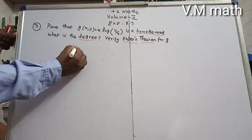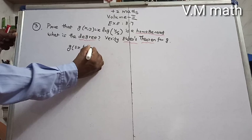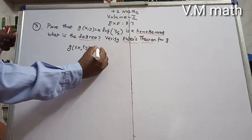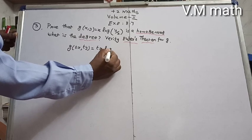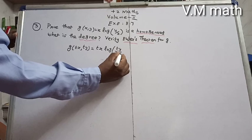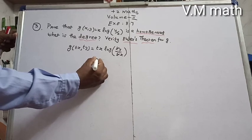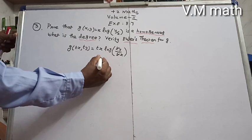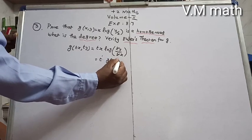We compute g(tx, ty): substituting x→tx and y→ty gives tx·log(ty/tx). The t cancels inside the log, so we get tx·log(y/x), which equals t¹·g(x, y). So g(tx, ty) = t¹·g(x, y).